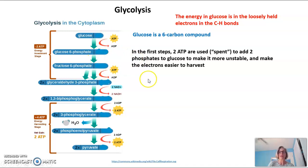In the first few steps of glycolysis, two ATP are actually used. They're spending money to add two phosphates to glucose to make it more unstable. It makes the electrons easier to harvest, and you might wonder why are you going to spend money when the whole point of this process was to make more money, to make more ATP? Well, we call this the energy investment phase, and it goes along with the phrase, you have to spend money to make money. The cell has to actually add some ATP to get the process going, to get glucose into an unstable enough form so that it can roll downhill and use that energy to make more ATP.